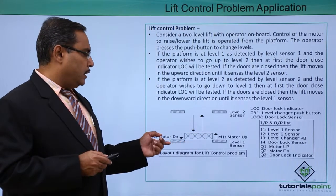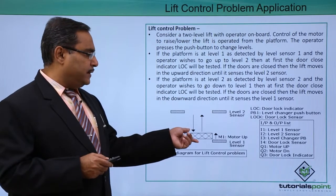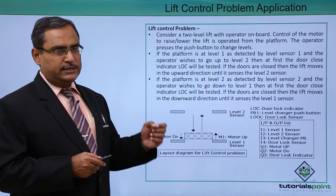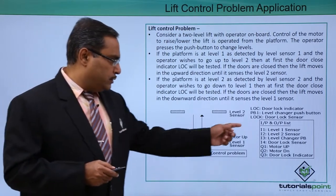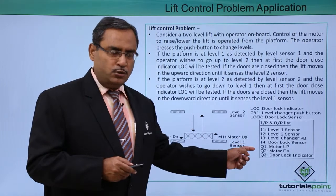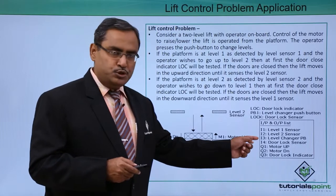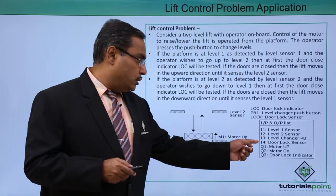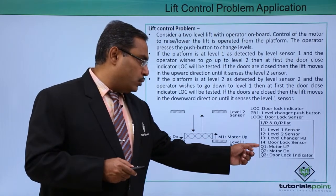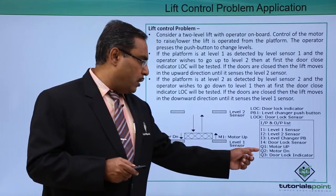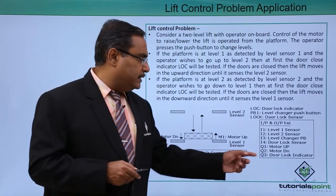From this description we can draw the respective diagram. We have the level one sensor, the level two sensor, and the lift which moves when the door is closed and the level changer push button has been pressed. The inputs are: level one sensor, level two sensor, level changer push button, and the door lock sensor. The outputs are: motor up (Q1), motor down (Q2), and door lock indicator lamp (Q3).